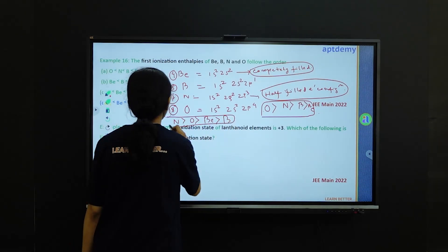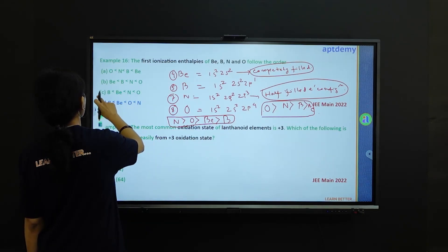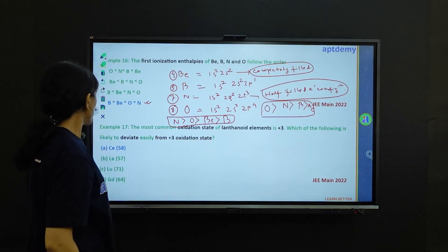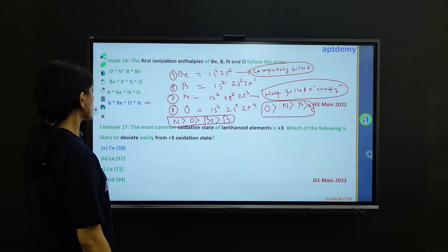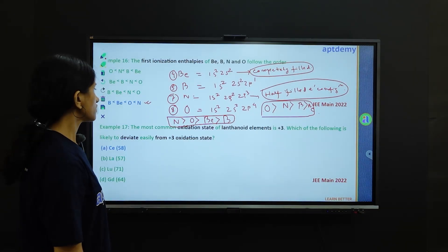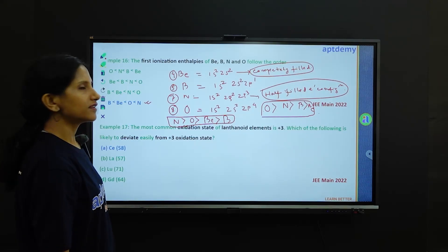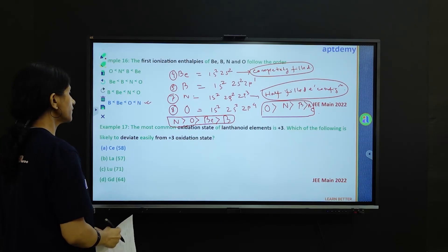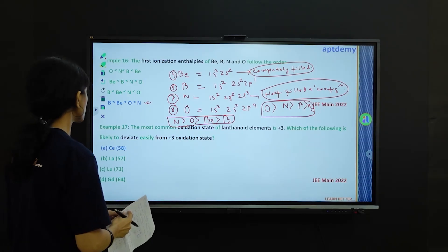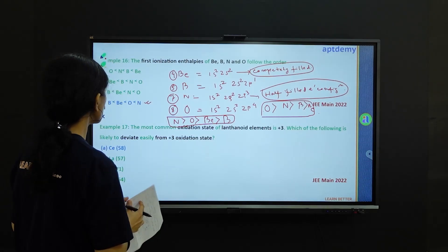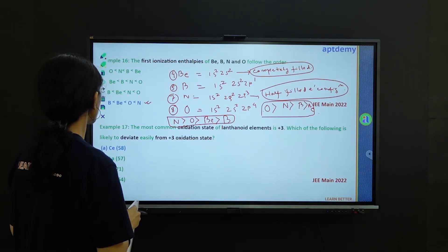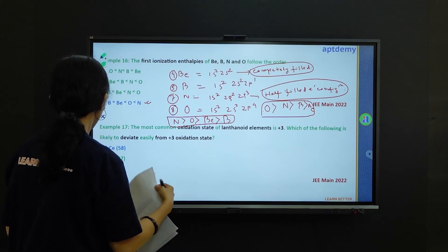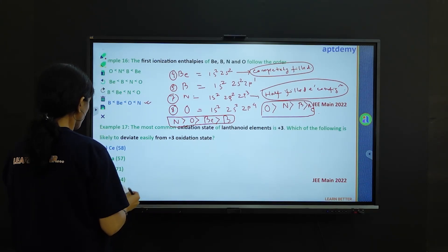The last problem, example 17, is asking the most common oxidation state of lanthanoid elements is plus 3. Which of the following is likely to deviate easily from plus 3 oxidation state? The options are given: Ce, La, Lu and Gd.